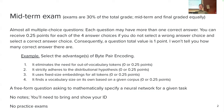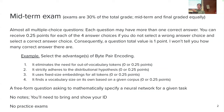For example, one question from last year's midterm: 'Select the advantages of byte-pair encoding.' The options are: (1) it eliminates the need for out-of-vocabulary tokens, (2) it strictly adheres to the distributional hypothesis, (3) it uses fixed-size embeddings for all tokens, and (4) it finds a vocabulary size on its own based on a given corpus. Let's go one by one. Does BPE eliminate the need for out-of-vocabulary tokens?